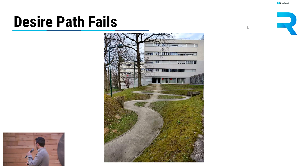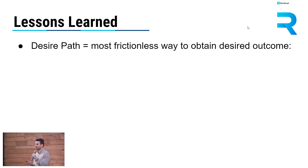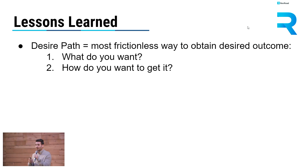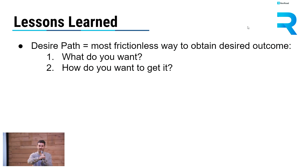So, desire paths. What can we learn from these lessons? A desire path is the most frictionless way possible to get a desired outcome. It's: what do you want, and how do you want to get it? I want to get from point A to point B. And how do I want to get it? I want to get there with as little friction as I can. I just want to go straight to the solution to my problem.